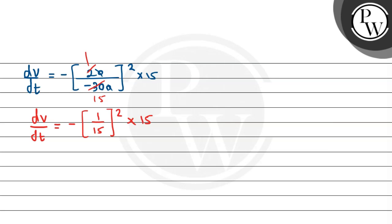So we have a minus sign here. Now, 15 cancels with 15. So one 15 will remain. And minus sign with minus sign multiply will give plus. Simply we get dv/dt will be equal to 1/15 meter per second.